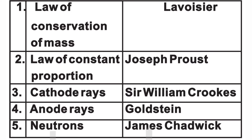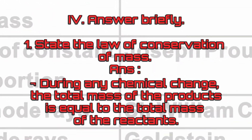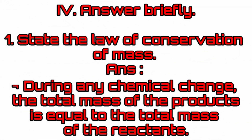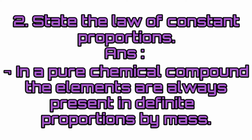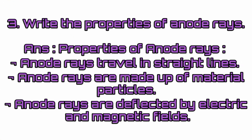Answer briefly. State the law of conservation of mass. Answer: During any chemical change, the total mass of the products is equal to the total mass of the reactants. State the law of constant proportions. Answer: In a pure chemical compound, the elements are always present in definite proportions by mass.